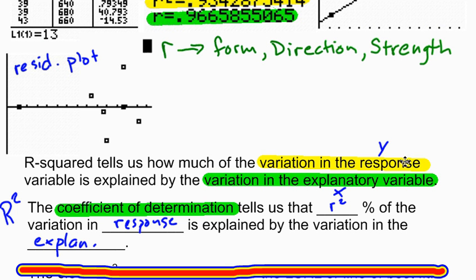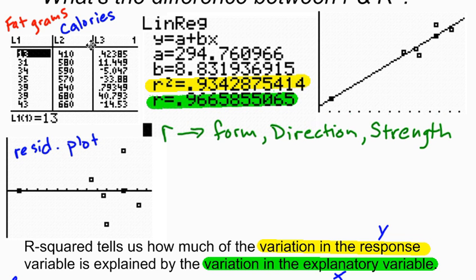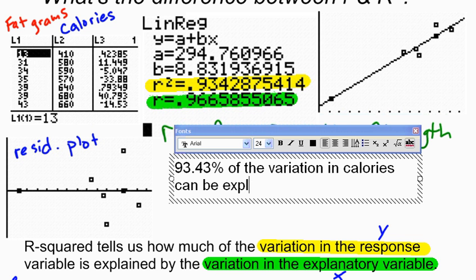So if I were to describe this situation up here, what I would say is I'm dealing with fat grams and calories. So let me type this in. I would say my R squared up here is 0.93. Now R squared is usually written as a percent. There's an announcement going on. So I'm just going to let it go and not redo this entire video. So here we go. Here's how I would write this. I could say 93.43% of the variation in calories can be explained by the variation in fat grams.